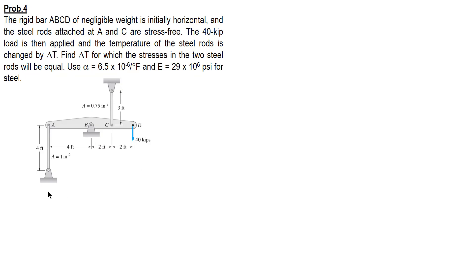For the steps, we start with the equilibrium equation. Let's denote rod number one and rod number two — both are steel rods. Considering the 40-kip force, rod number one will be stretched as well as rod number two, so the tensile force direction for rod one is away from point A, which is downward. Considering point C, the force is away from point C, so it is upward — F2.